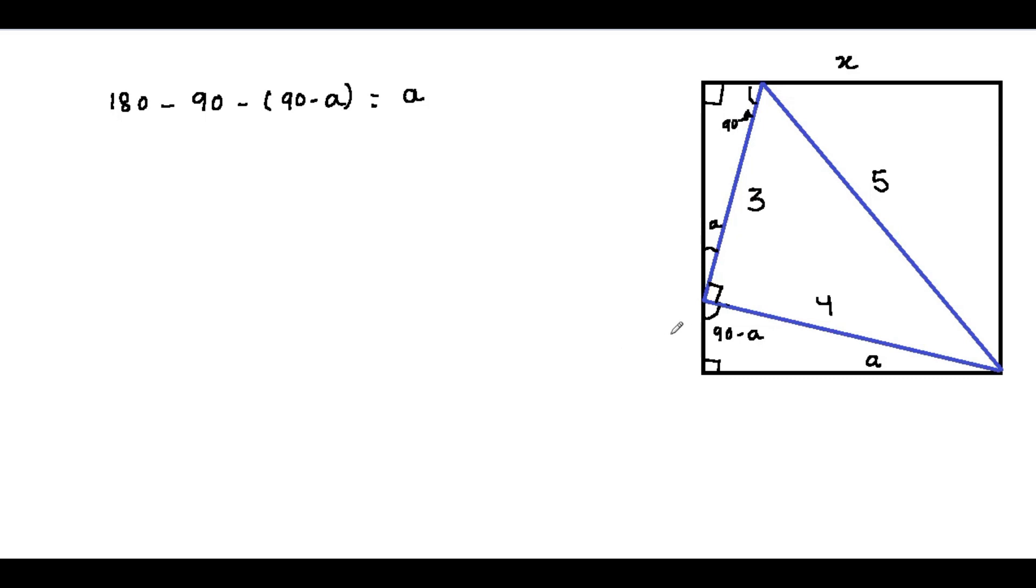But how does that help us solve the problem? Let's assume the shorter side of this triangle as y. Since the entire side of the square is x, this distance will be x minus y.